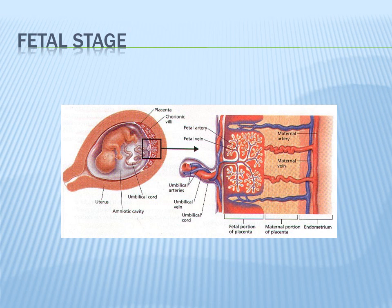During the fetal stage, starting at 56 days and continuing to birth, the major organs are already developed and now just continue to grow. During this time, the fetus is less susceptible to infection, radiation, and drugs. During the prenatal period — conception to birth — we have the pre-embryonic, embryonic, and fetal stages. At birth it becomes a neonate, lasting until the first 30 days of life, and after that it's called an infant until one year old.